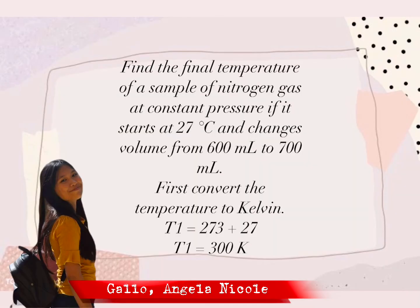Find the final temperature of a sample of nitrogen gas at constant pressure if it starts at 27 degrees Celsius and changes volume from 600 ml to 700 ml. First, convert the temperature to Kelvin: T1 equals 27 plus 273, so T1 equals 300 K.